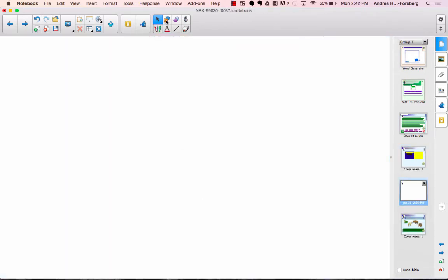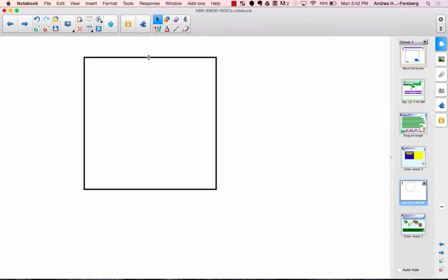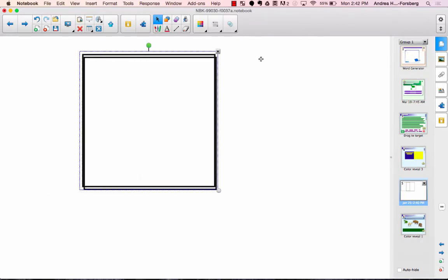To set up an activity like this simply start out by using a square tool. You're going to put two squares side by side. The size will be determined by the amount of text you have.